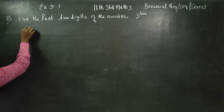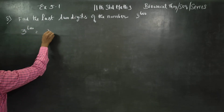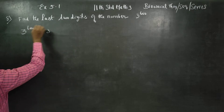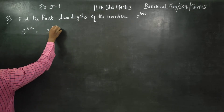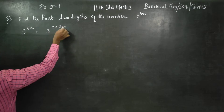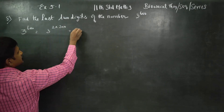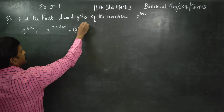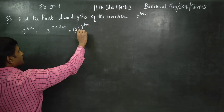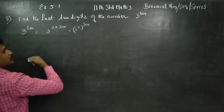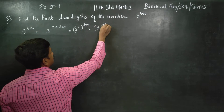3 power 600 can be written as 3 power 600 split into 2 into 300. 3 squared is 6 — this can be written as 3 power 2, whole power 300, because power over power means multiply. 2 into 300 is 600. 3 squared can be written as 9 power 300.